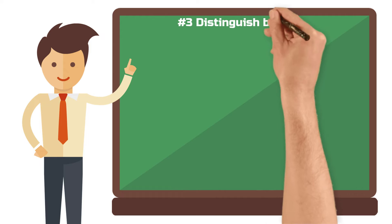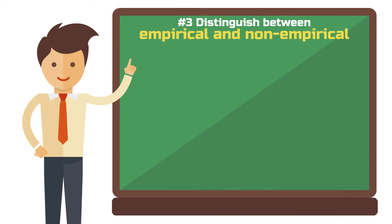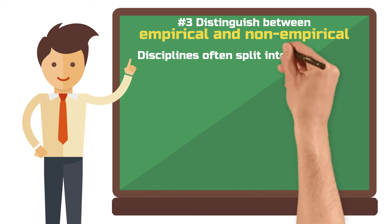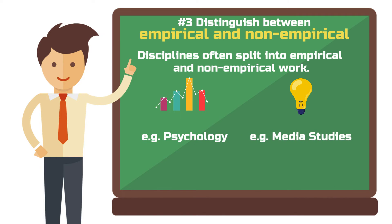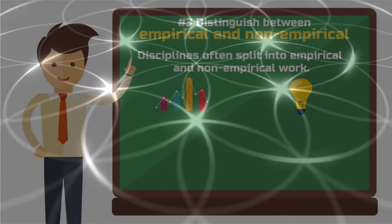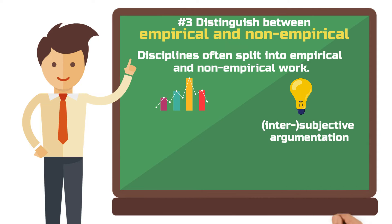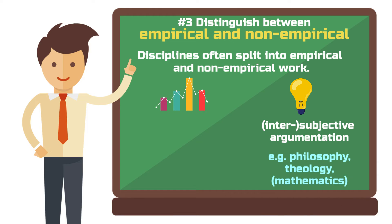Step 3: distinguish between empirical and non-empirical. In most disciplines there is some sort of split between empirical and non-empirical work. Sometimes the empirical part is more dominant, for example in psychology. Other disciplines are more inclined to non-empirical research but sometimes use empirical methods, for example media studies. When a discipline mostly focuses on non-empirical approaches, it doesn't mean it is less valuable or less scientific. Examples of such disciplines include philosophy, theology, other humanities and mathematics.